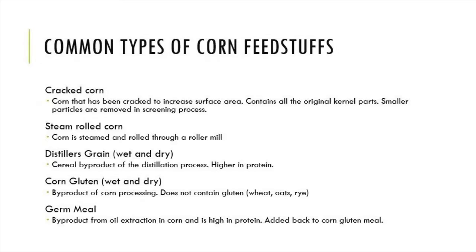Some feedstuffs to use in your classroom for this activity include cracked corn, which is corn that has been cracked to increase the surface area. This comprises all components of the original kernel parts, anything from the bran to the endosperm, the germ, etc. The smaller parts are removed in a screening process just as if you were mining for gold, so you're left with the larger particle size.